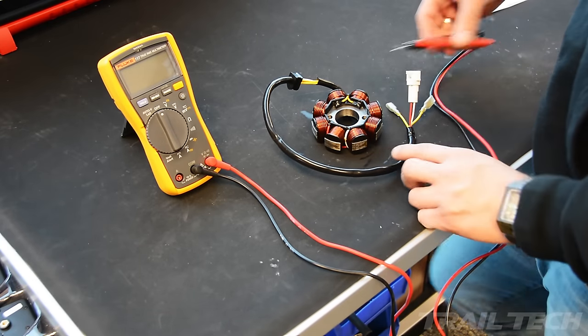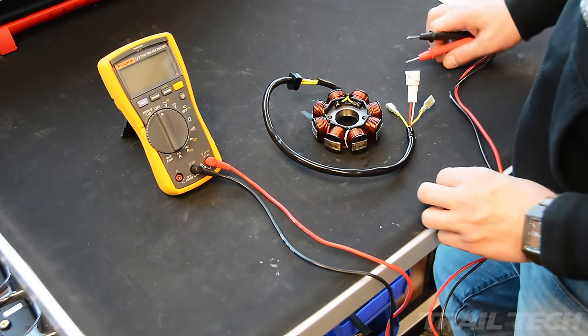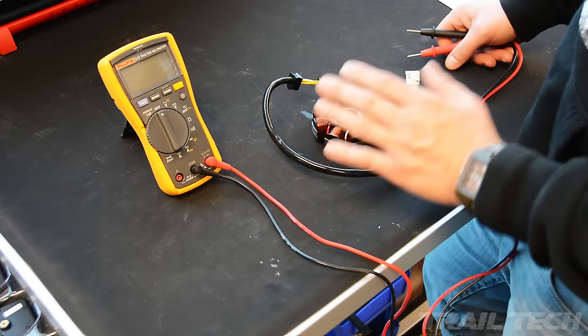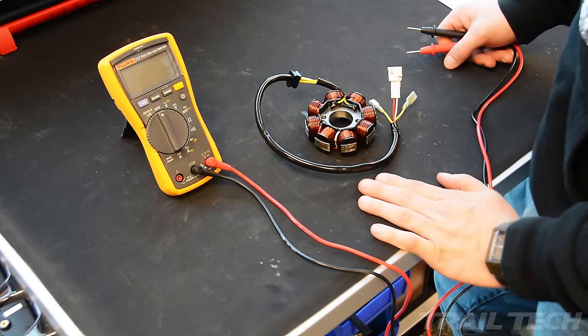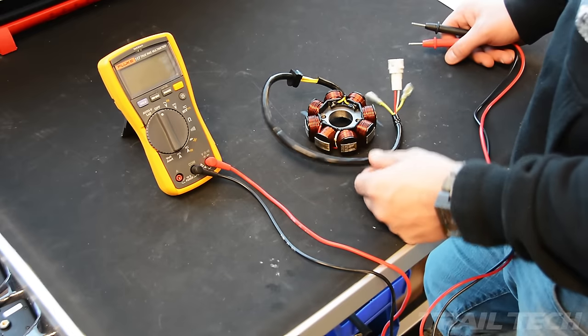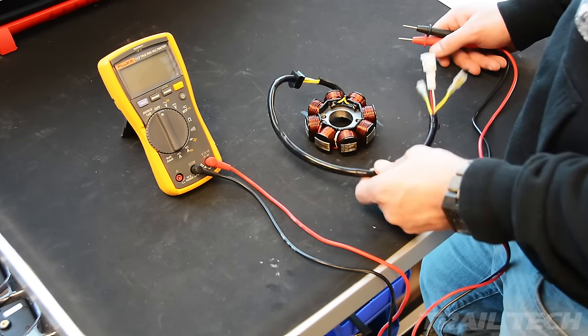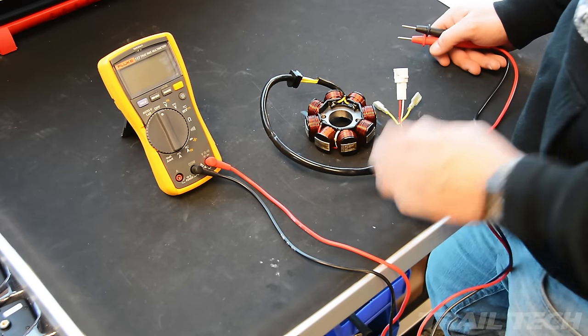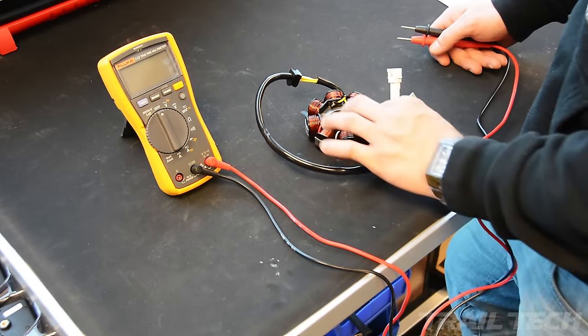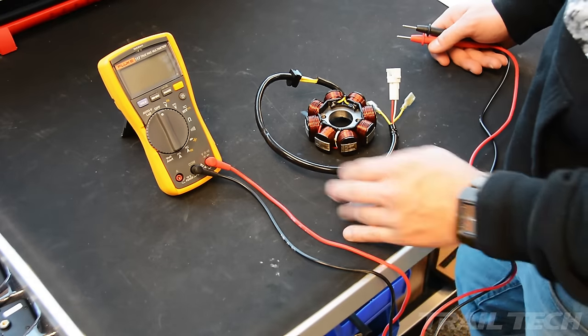The next thing that we're going to test is resistance. So for this, same thing, you're going to have your stator sitting on the bench. You can also do this with it in the bike. It really doesn't make a difference. But the nice thing about this test is you can do it with the bike off. It doesn't need to be running. We're just looking at resistance to make sure that these coils are all still in good working order.